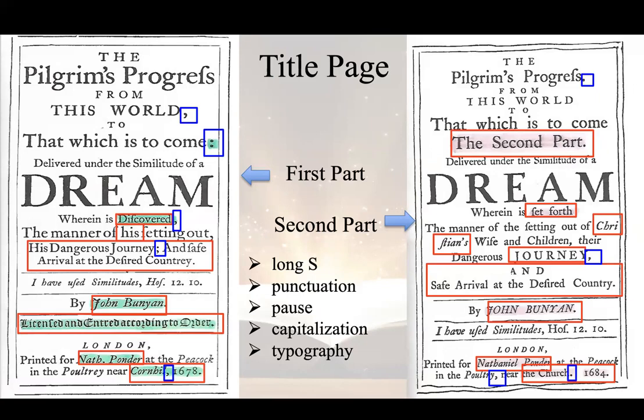Besides, we can tell the right side basically follows a capitalization standard as in the left, adding the phrase 'the second part' with each word's first letter capitalized, and changing the word 'journey' and 'John Bunyan' to all letters in capital form. On the whole, the typography of the title page in the second part has been somewhat standardized and is much more reader-oriented.